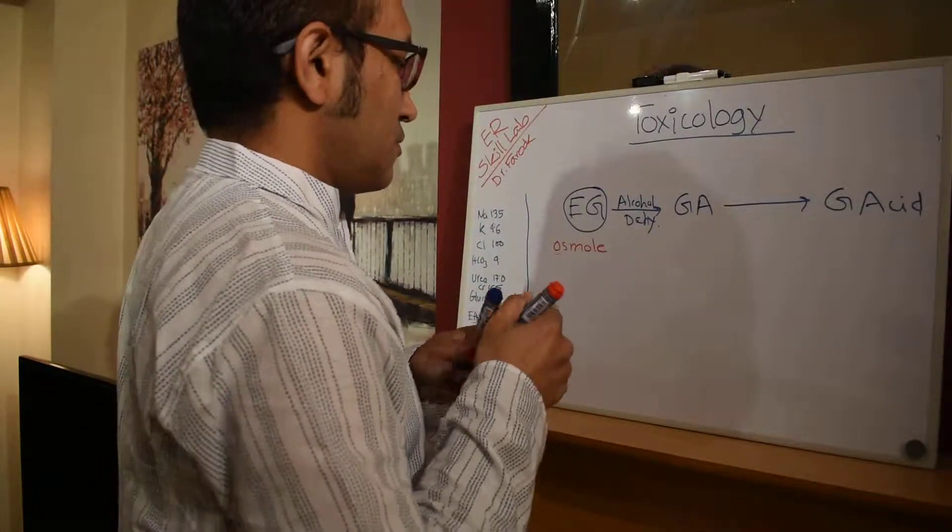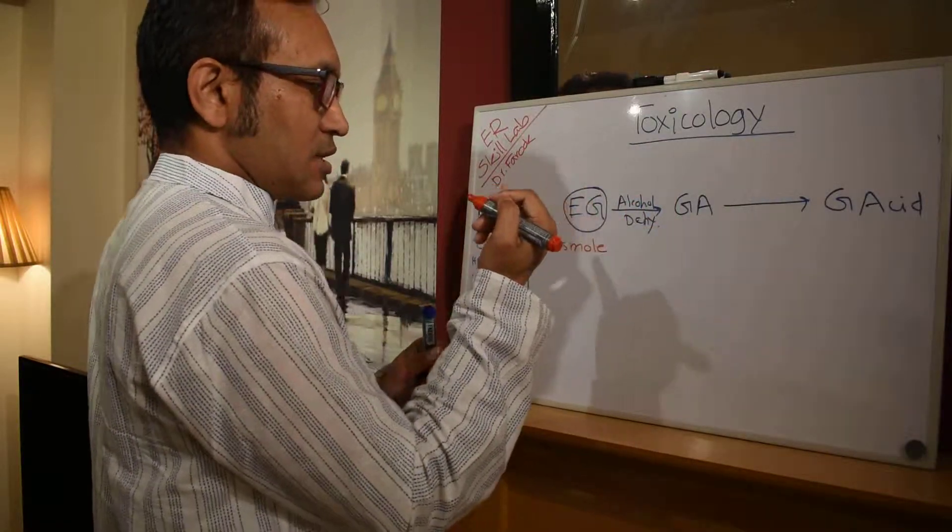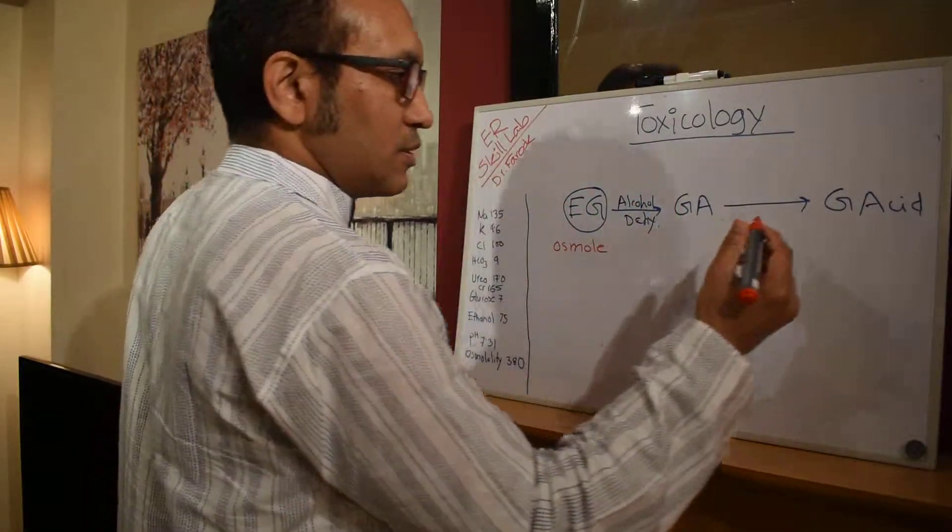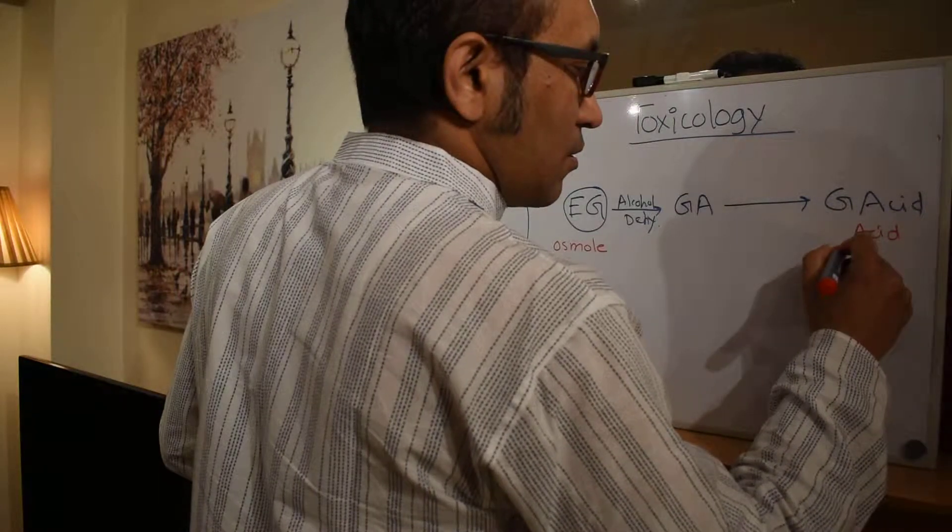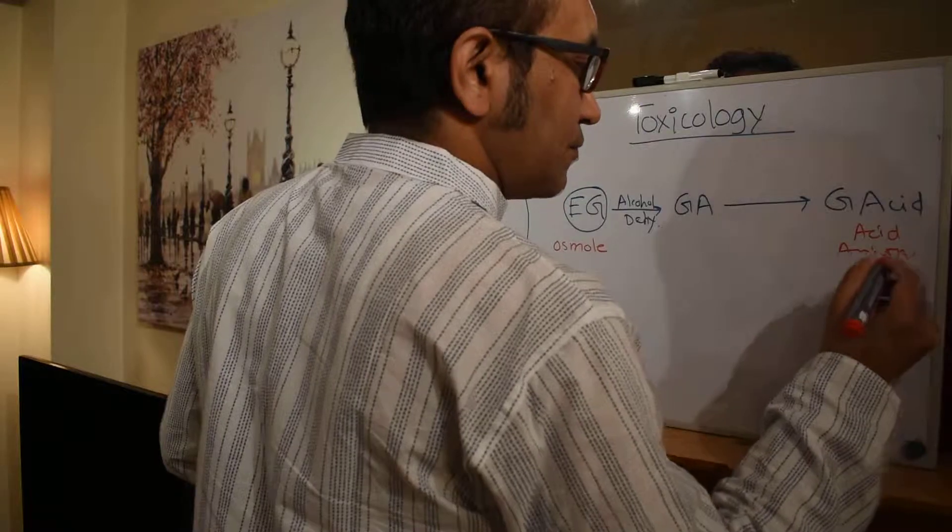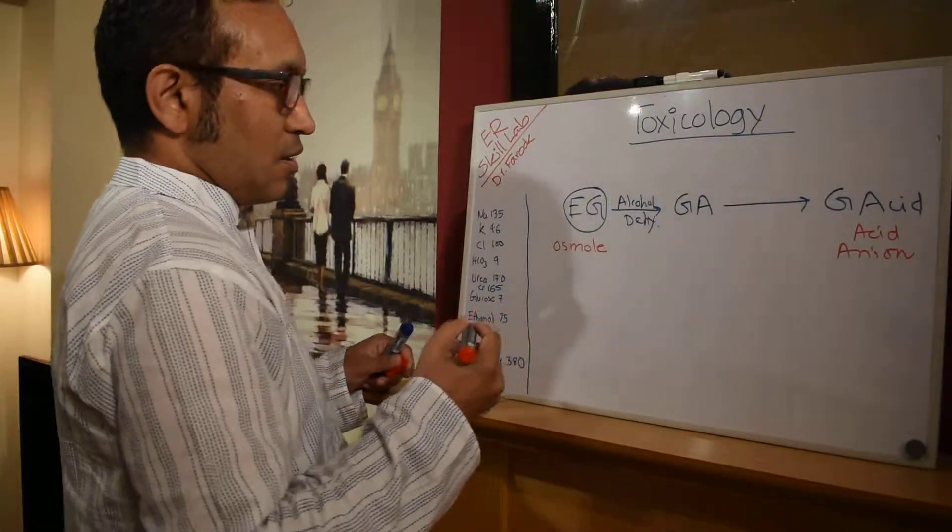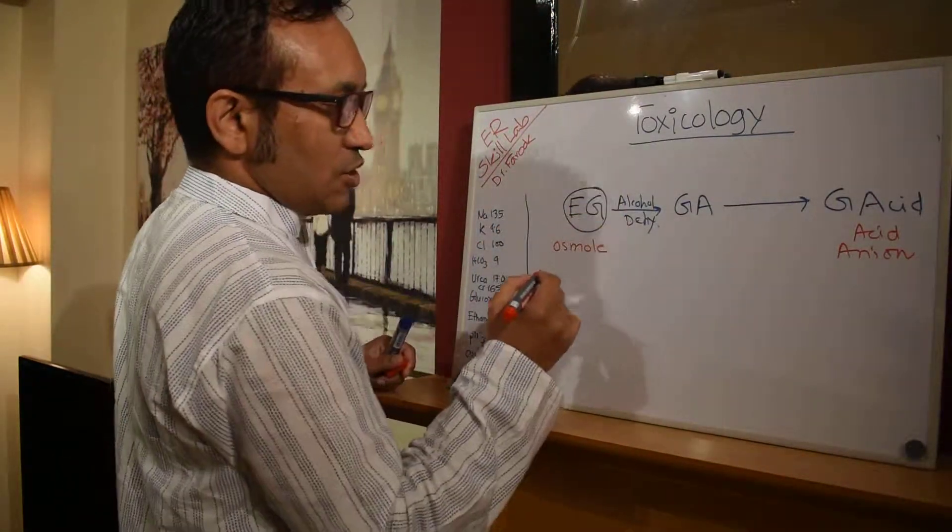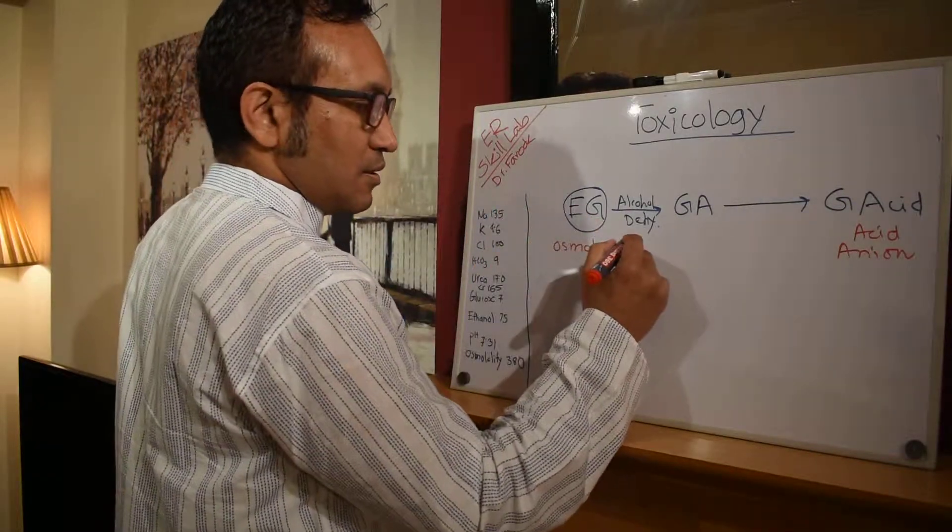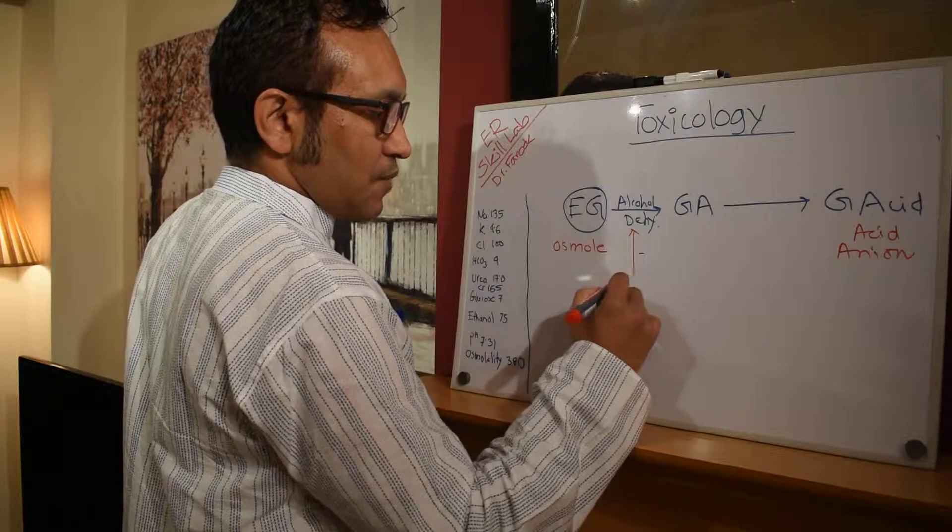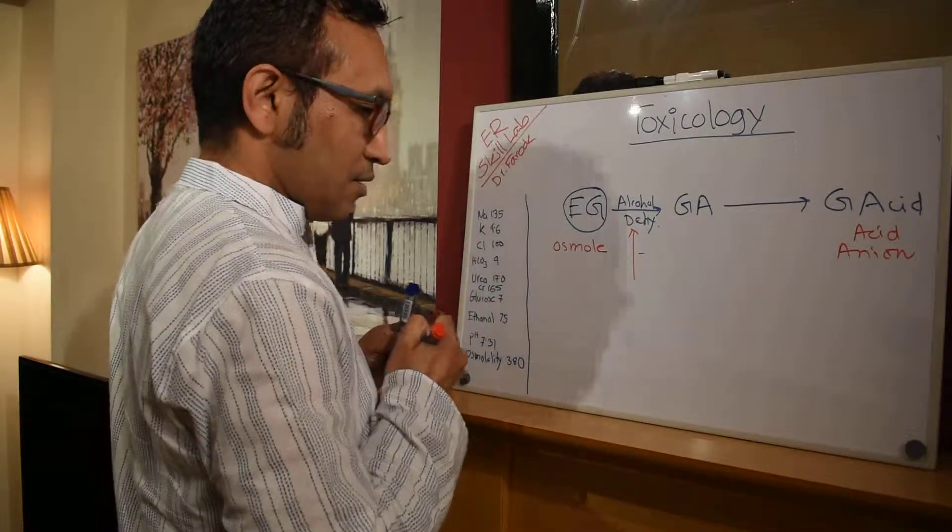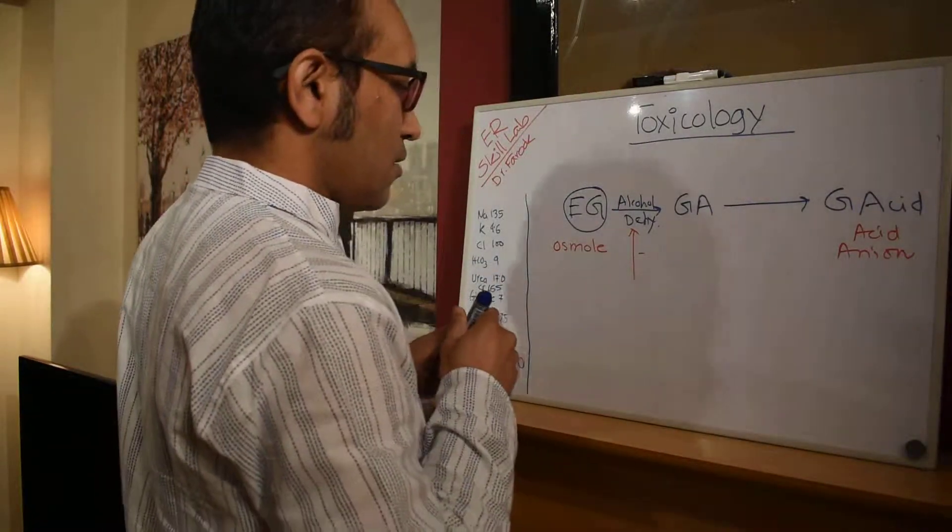So we can see it starts as an osmol and ends up as an acid or anion. The antidote we want to give immediately inhibits this enzyme. So we are giving here fomepizole.